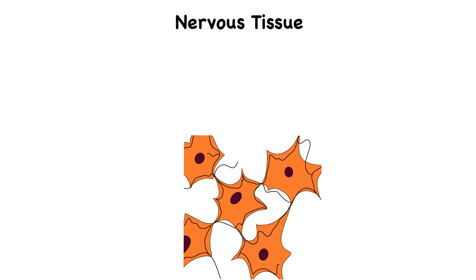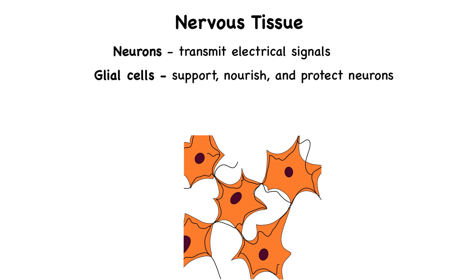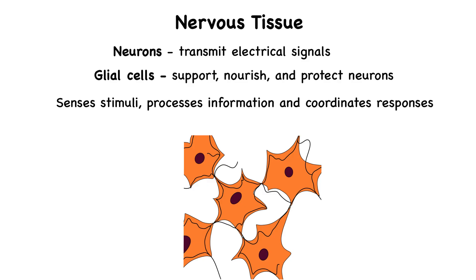And then we have nervous tissue. Nervous tissue is designed for communication. It consists of neurons, which transmit electrical signals, and glial cells, which support, nourish, and protect the neurons. This tissue forms the brain, spinal cord, and nerves, and it's essential for sensing stimuli, processing information, and coordinating responses.